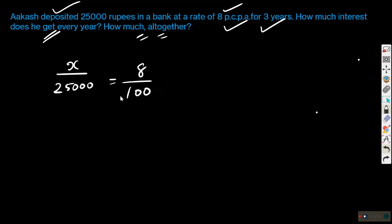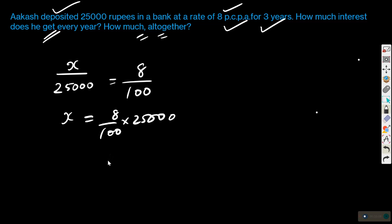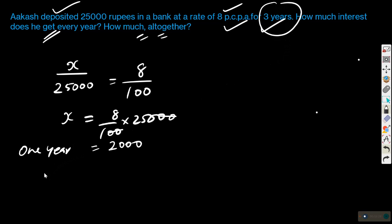At the next stage, multiply 25,000 on the right side: 8 into 25,000 upon 100. Cancel 100 with 25,000 giving 250, and 8 into 250 equals 2,000. This is the interest for one year. But Akash has deposited for three years, so 3 into 2,000 equals 6,000. This is the total interest that Akash will be getting.